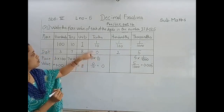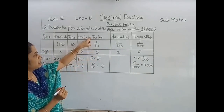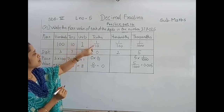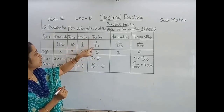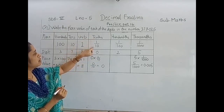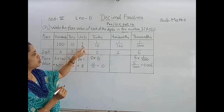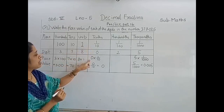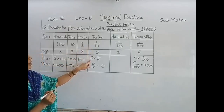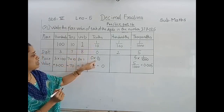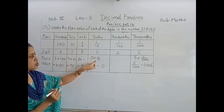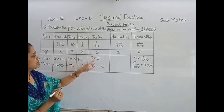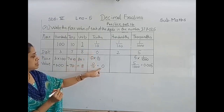Next digit is 0 and the place of 0 is the 10th place, meaning 1 upon 10 — the 10th part of the unit. So this 0 we have to multiply by 1/10. So the place value of 0 is 0.